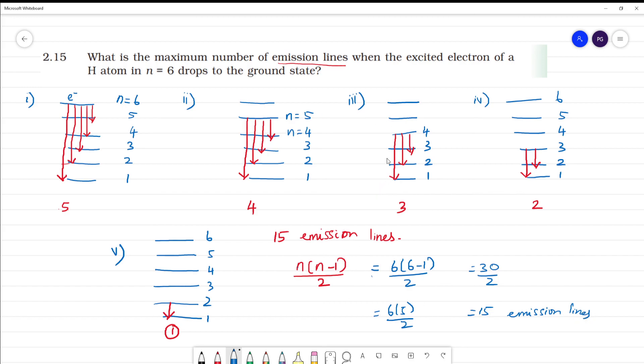This is directly the formula. N minus 1, this is the explanation. N equals 6, and we have emission lines from n equals 6 to ground state.